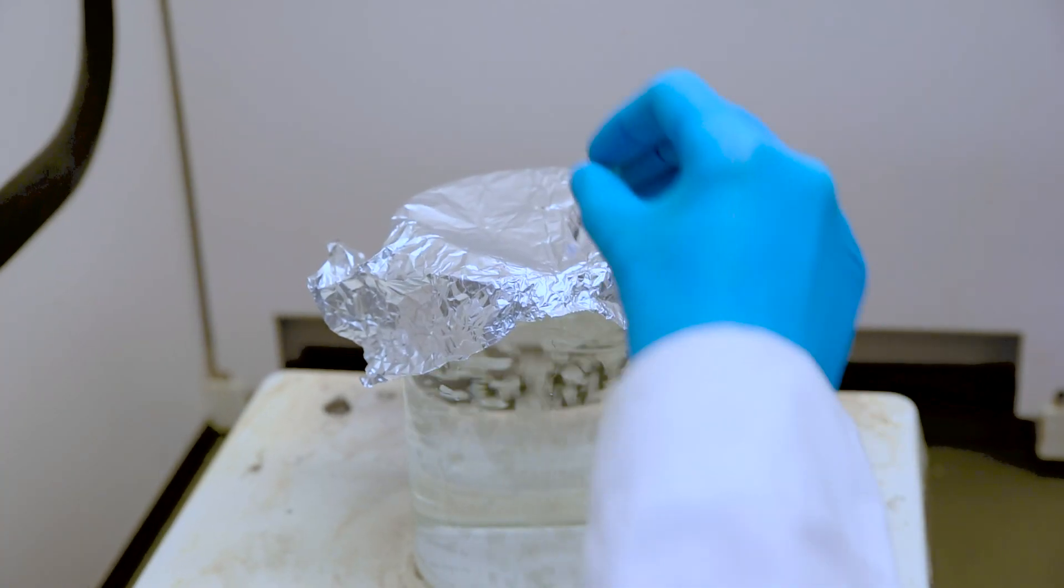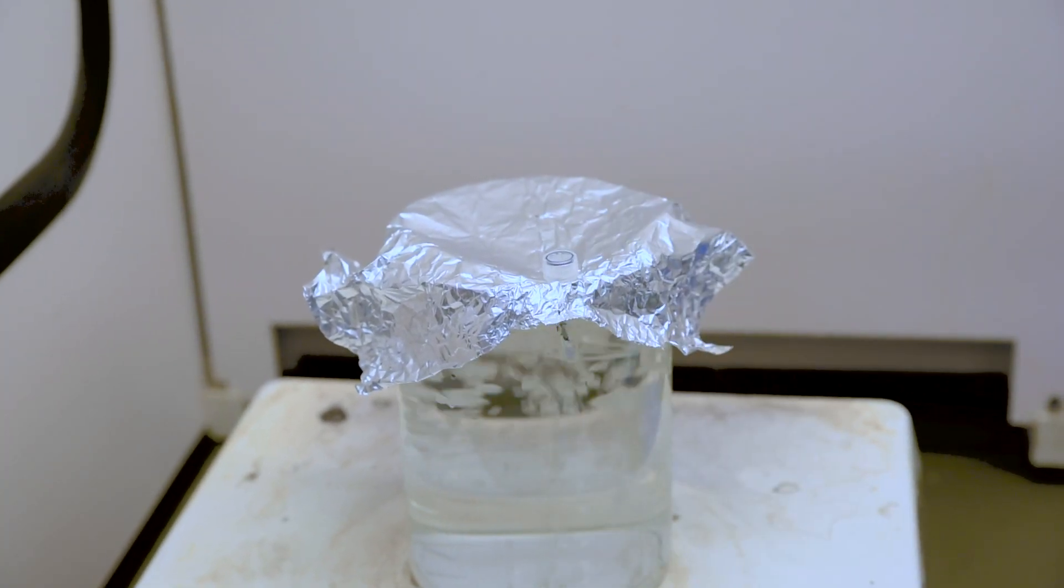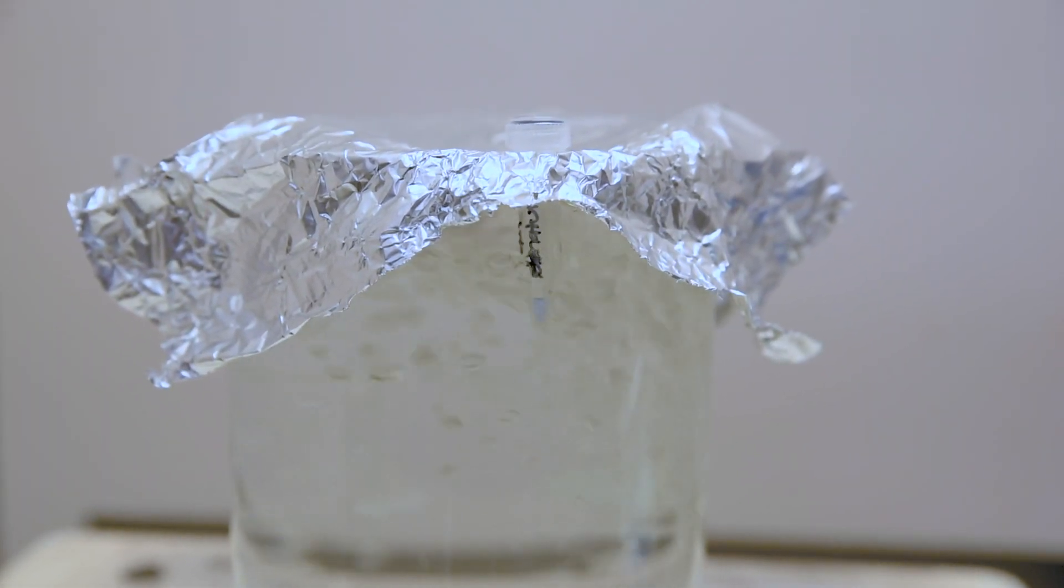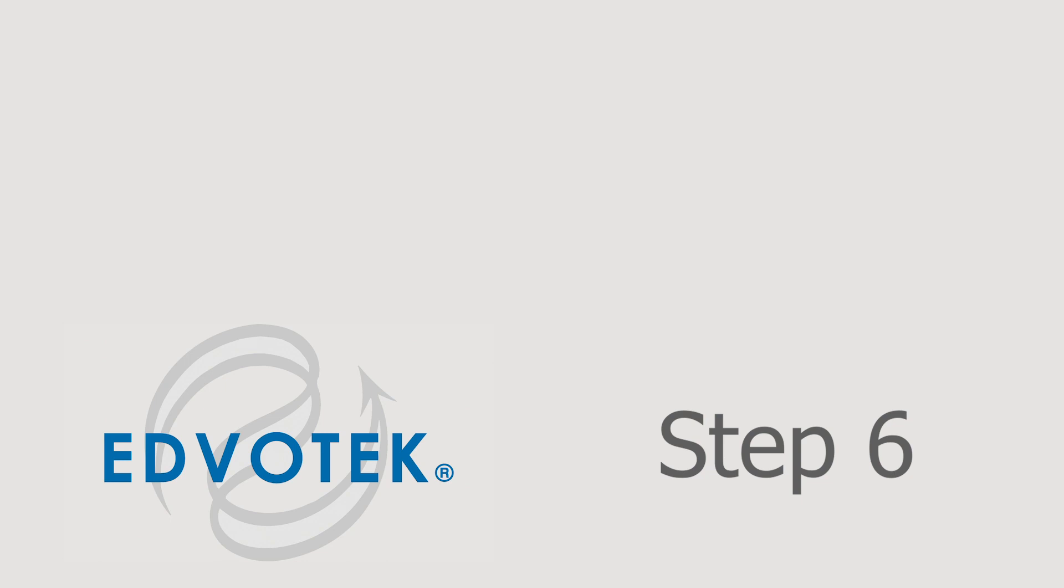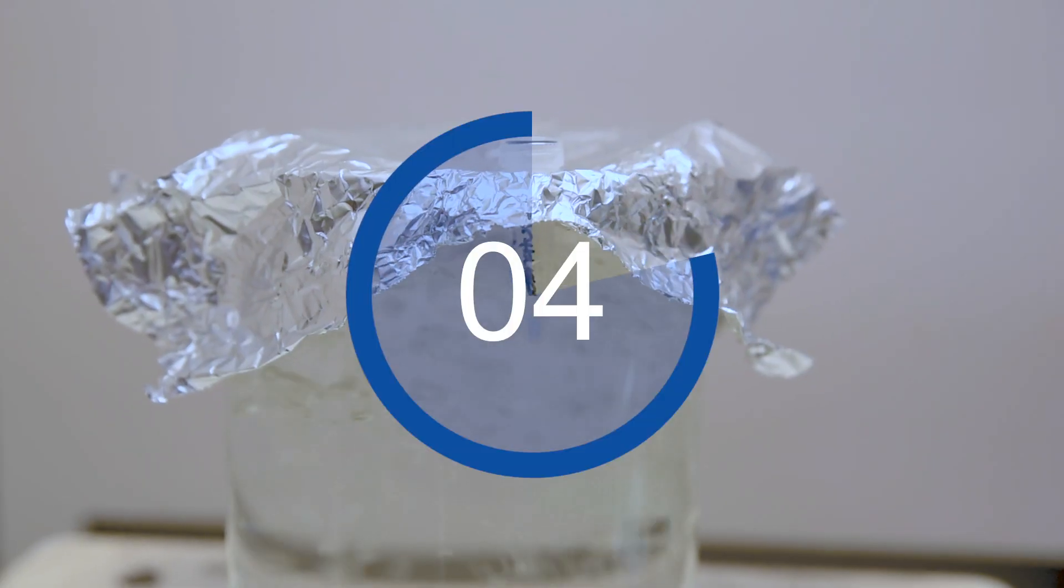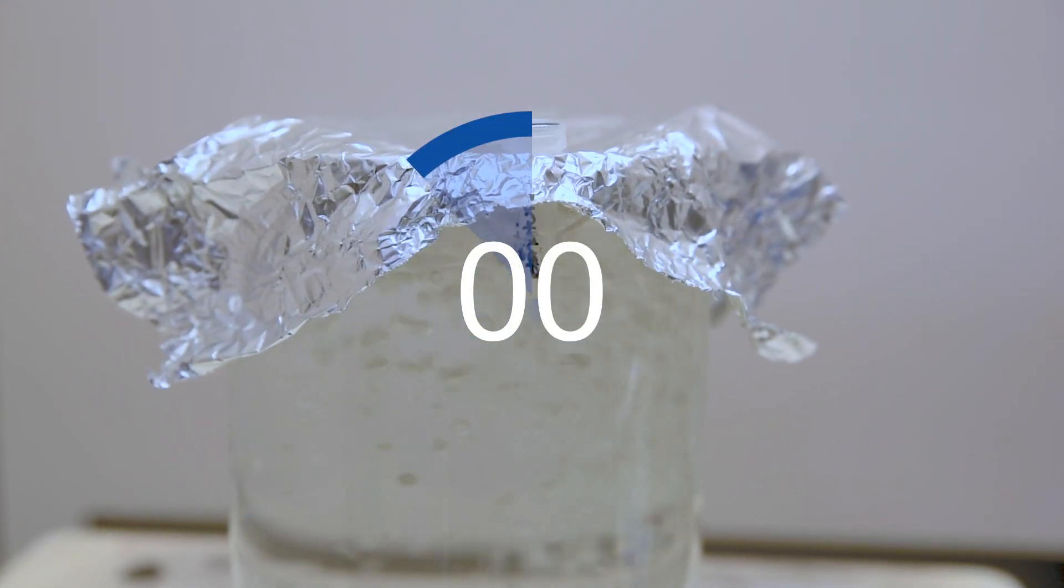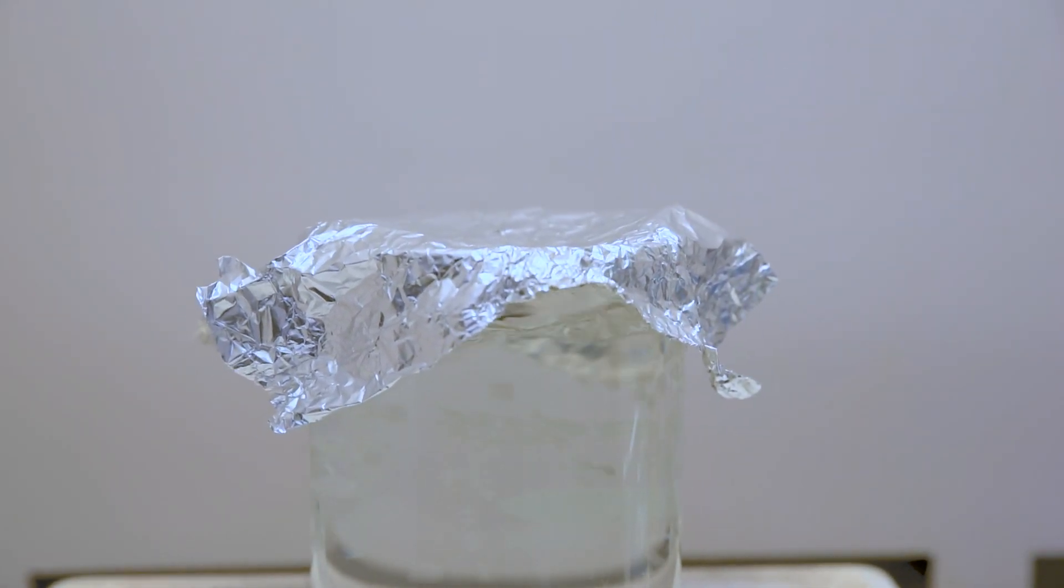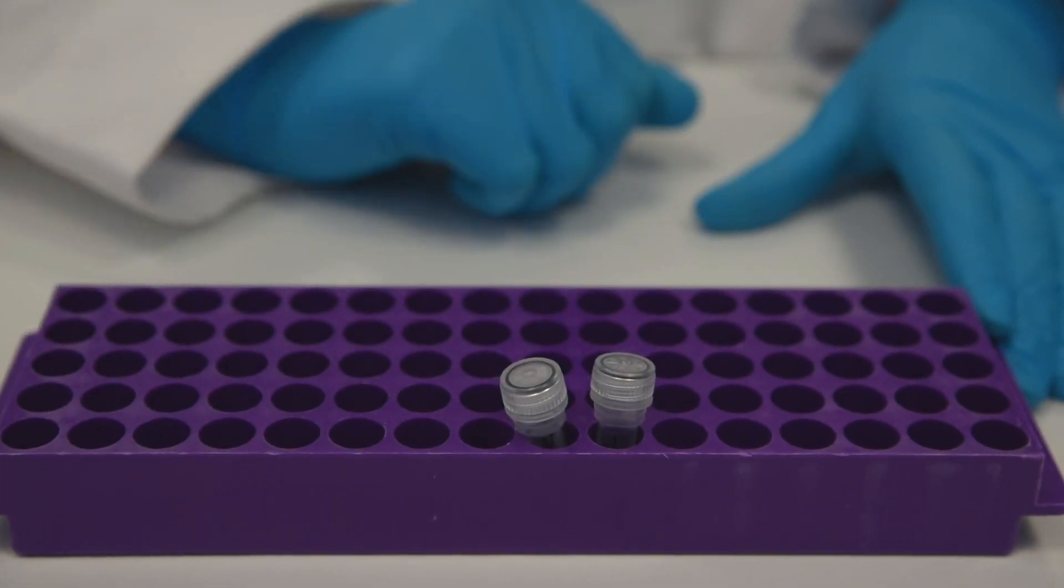Step 5: Push the bottom of the GFP sample tube to be denatured through the foil and immerse in the boiling water. The tube should be kept suspended by the foil. Step 6: Boil the GFP sample for 5 minutes. Step 7: Remove the sample tube from the beaker and allow it to cool for a few minutes at room temperature.